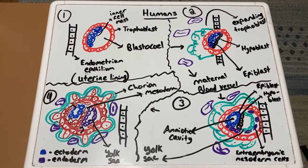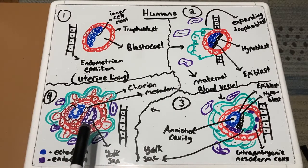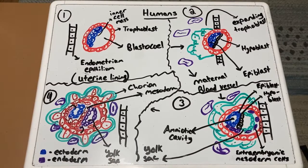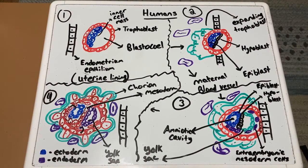The placenta is extremely important for the embryo because it exchanges nutrients, gases, and waste between the embryo and the mother, and also produces hormones. At the end of gastrulation, the germ layers have formed and the embryo is surrounded by the extra-embryonic mesoderm and four extra-embryonic membranes: the amnion, the chorion, the allantois, and the yolk sac.